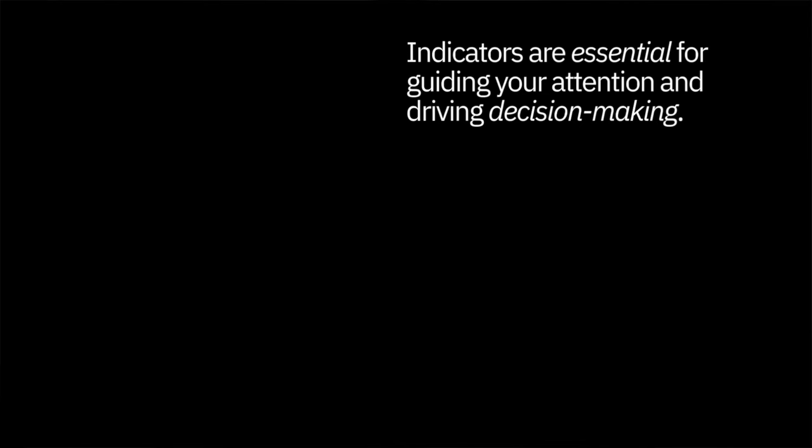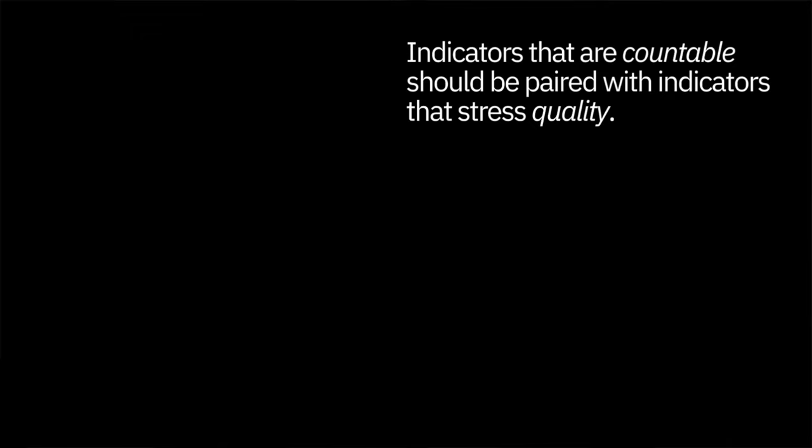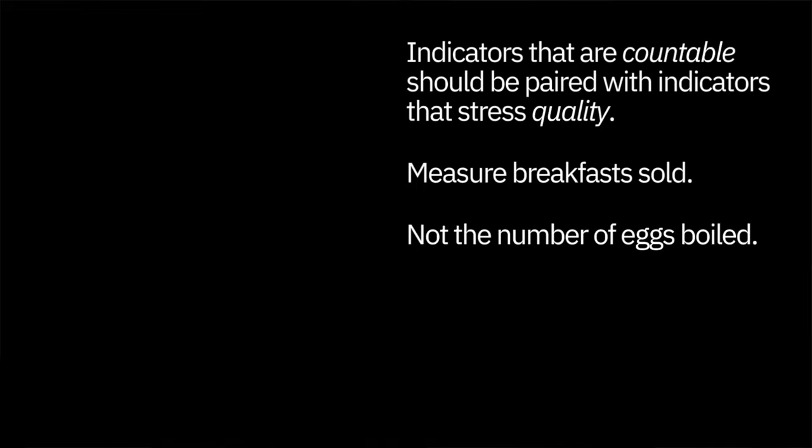Indicators are essential for guiding your attention and driving decision making. You need to look at them early each day so you can correct problems before they get out of hand. At the same time, you need to guard against overreacting. Do this by pairing indicators so effect and counter effect can be measured. For example, increased sales and decreased quality is a problem. Any measurement is better than none, but truly effective indicators focus on output, not activity. Indicators that are accountable should be paired with indicators that stress quality. Measure breakfast sold, not the number of eggs boiled.